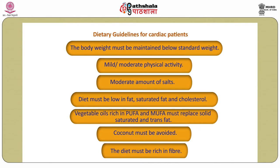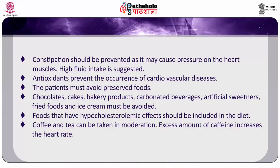Now let's look at the dietary guidelines for cardiac patients. The body weight of cardiac patients must be maintained well below the standard weight and calorie intake restricted accordingly. Mild and moderate physical activity must be maintained in balance with calorie intake to maintain normal health. Moderate amount of salt can be consumed except in hypertensive patients. The diet must be rich in fiber by including raw salads, fruits, green leafy vegetables, and whole grains. Constipation should be prevented as it may cause pressure on the heart muscles; high fluid intake is suggested. Whole grain cereals and fruits and vegetables rich in antioxidants such as carotenoids, vitamin E, and C prevent the occurrence of cardiovascular diseases.